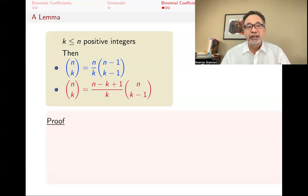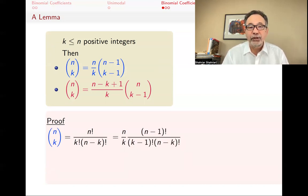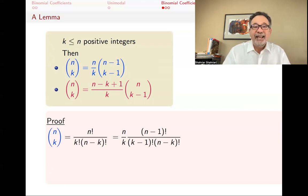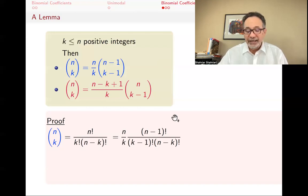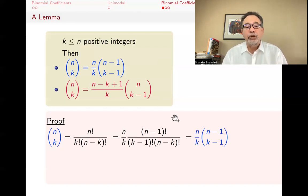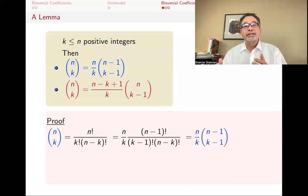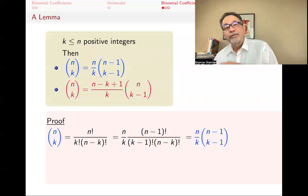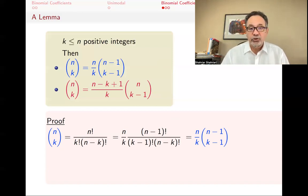Why are these true? They follow from the formula. n choose k is n! divided by k! times (n−k)!. Taking an n from the numerator and a k from the denominator: the numerator becomes (n−1)! and k! becomes (k−1)!. What remains is exactly n−1 choose k−1, since n−1 choose k−1 equals (n−1)! divided by (k−1)! times (n−1−(k−1))! = (n−1)! / (k−1)! (n−k)!. So the first identity follows.